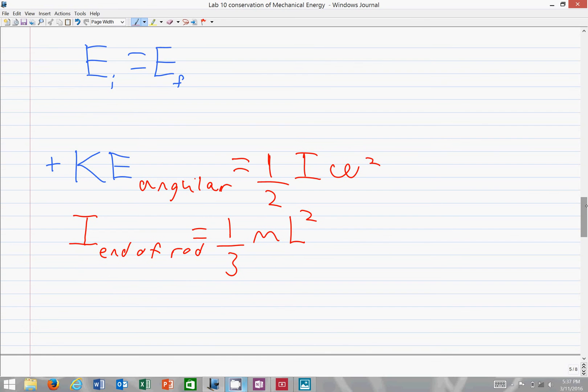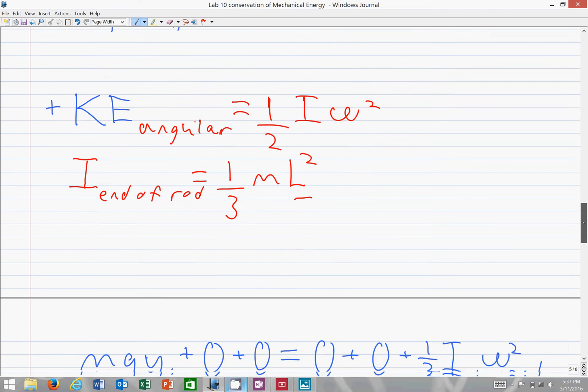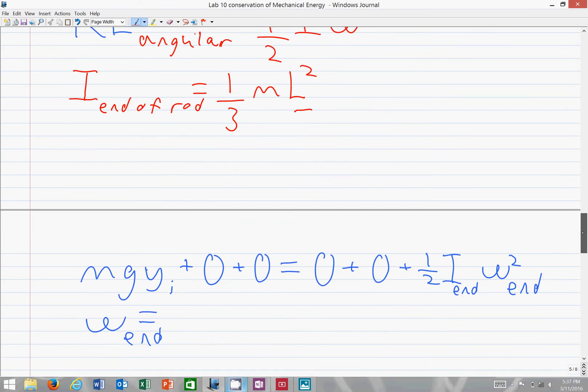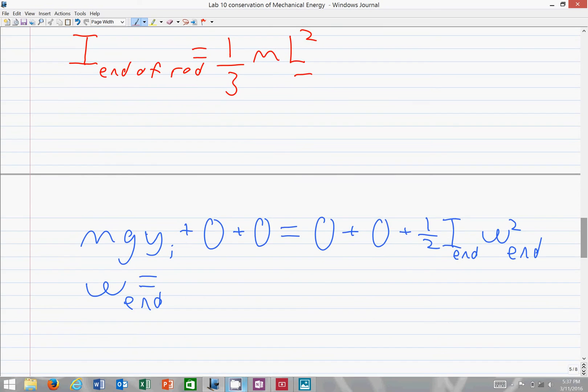So not too terrible, seeing as the length is one. So when we set up the energy statement again, much like the last part, it is the initial potential energy equaling the final angular kinetic energy. And the rest of these terms, the translational and the final potential energy, and the final translational kinetic energy being zero.